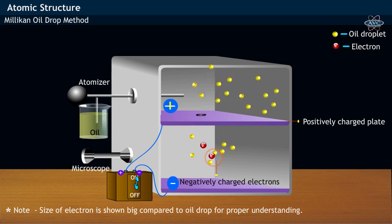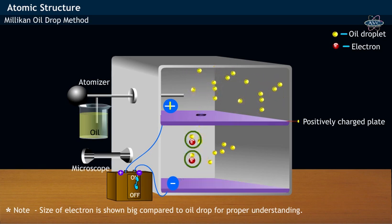The negatively charged electrons lost from the oil droplets due to ionization clings or gets attached to the oil droplets as shown, which makes these oil droplets negatively charged.